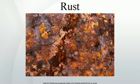Rust is an iron oxide, usually red oxide formed by the redox reaction of iron and oxygen in the presence of water or air moisture. Several forms of rust are distinguishable visually and by spectroscopy, and form under different circumstances.